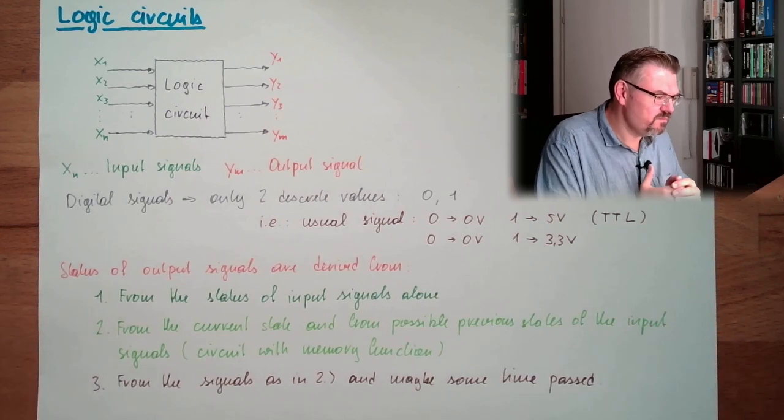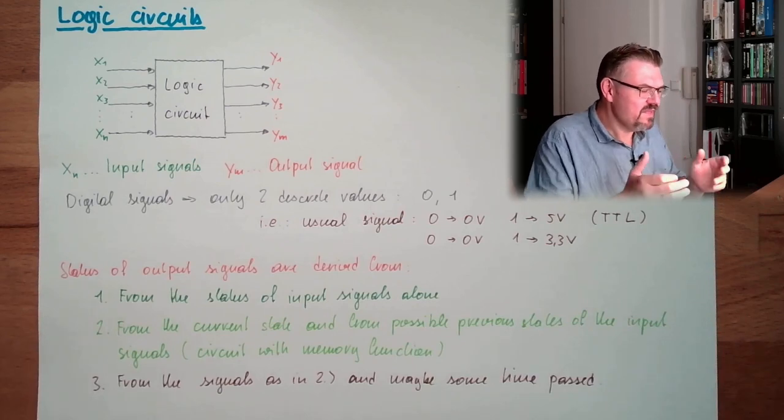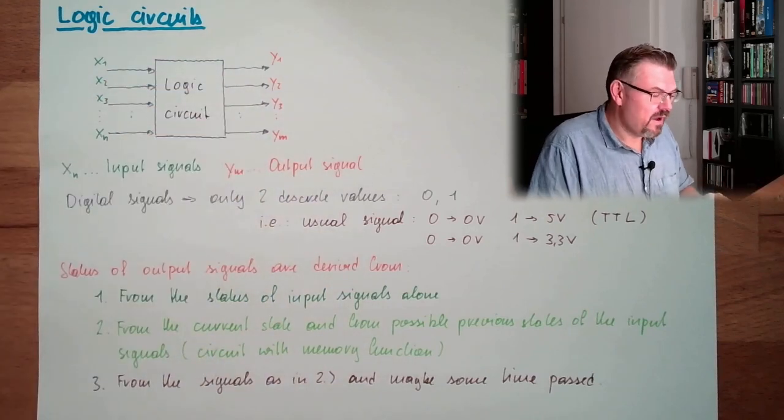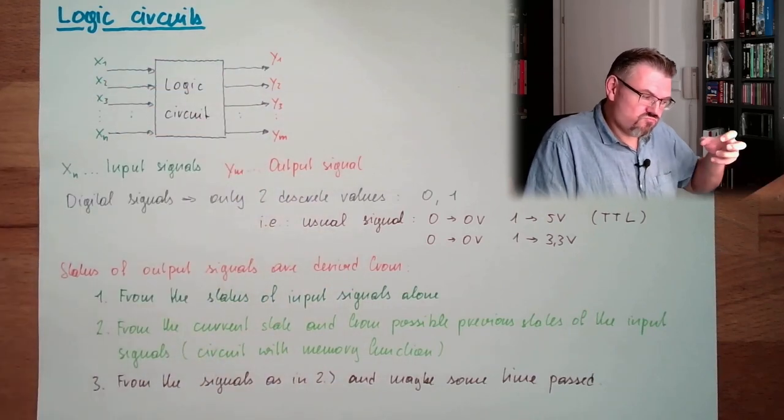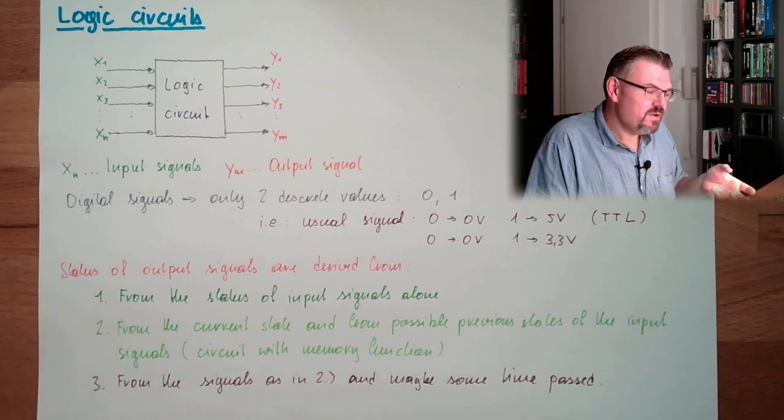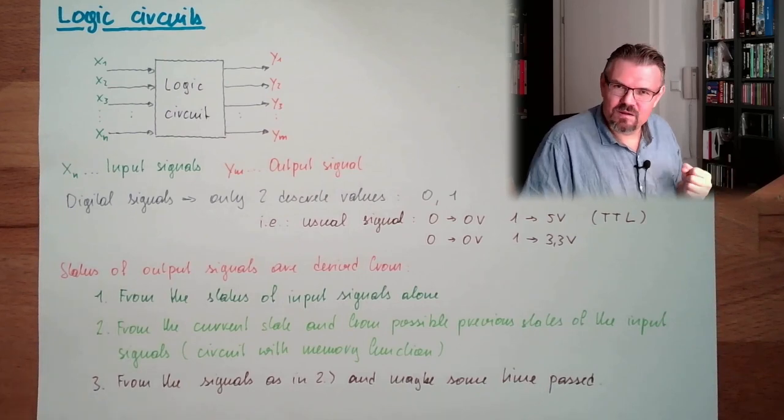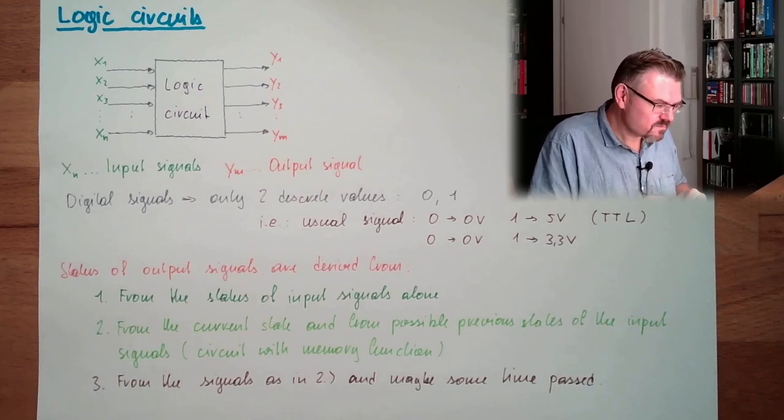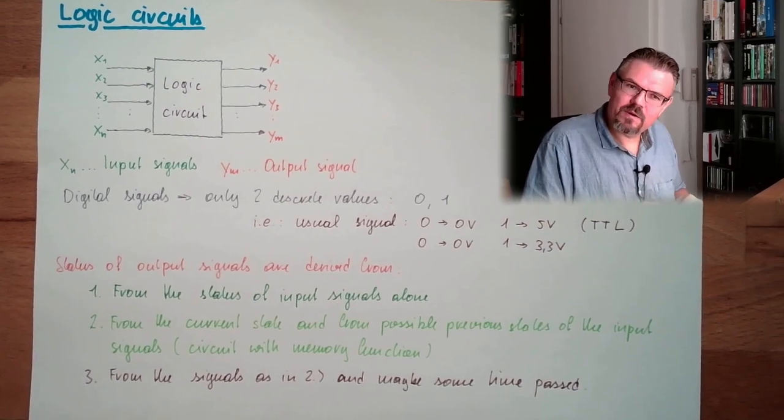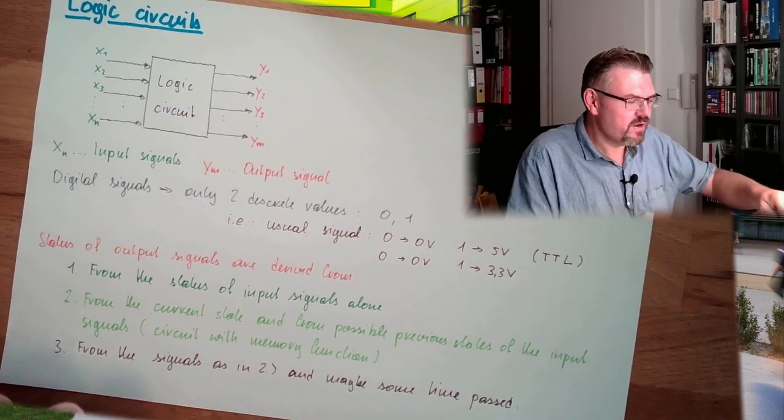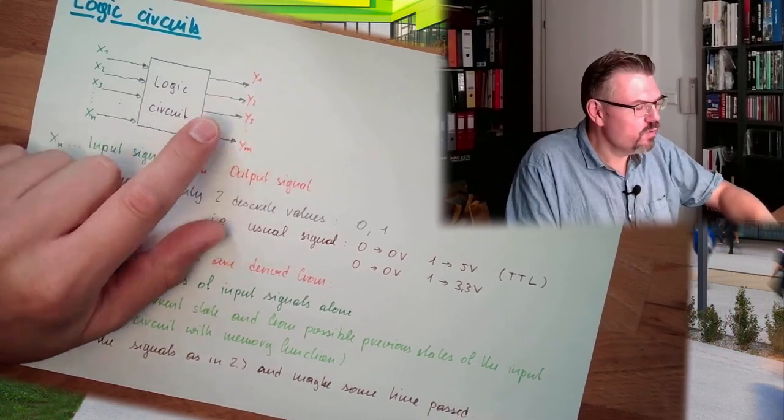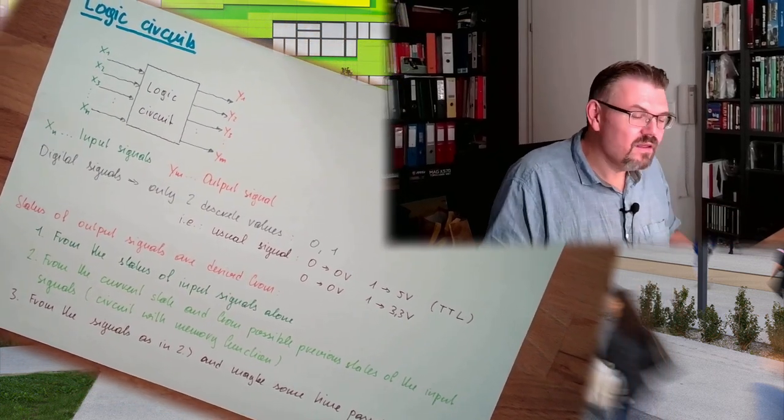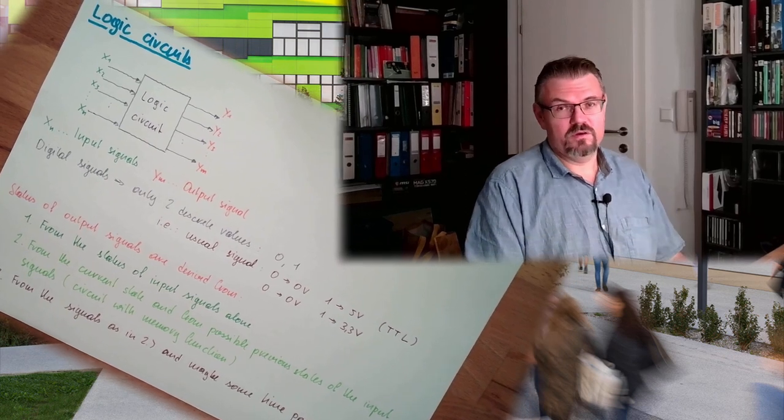So these are the possibilities. And these are signals. And the logic inside can either be described by some logic elements, base logic elements, or by Boolean algebra. And Boolean algebra we are going to talk about, then we see, then it's written y1 equals something, something.